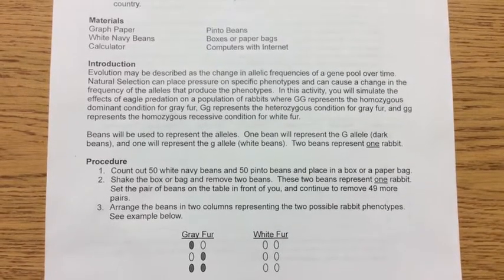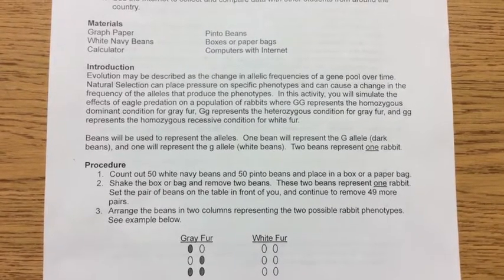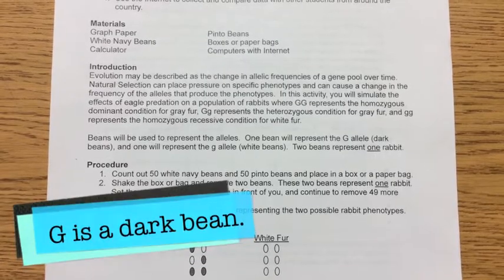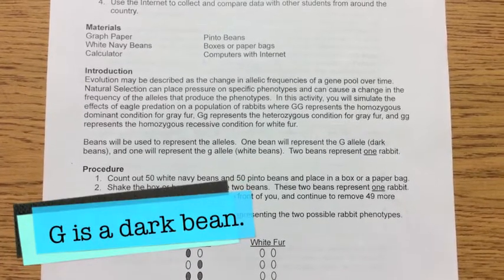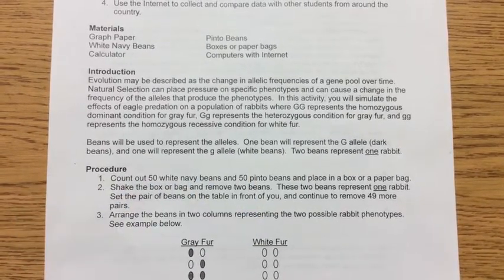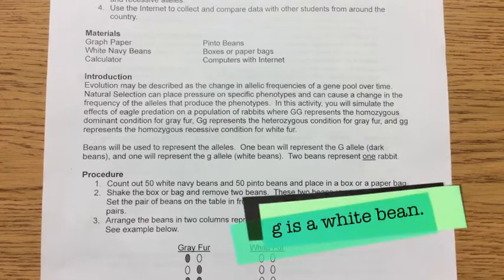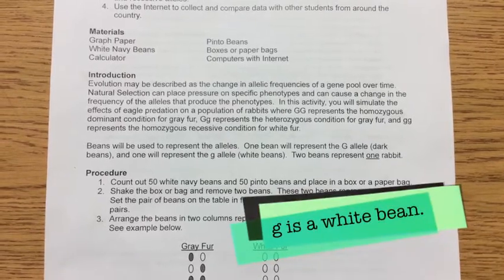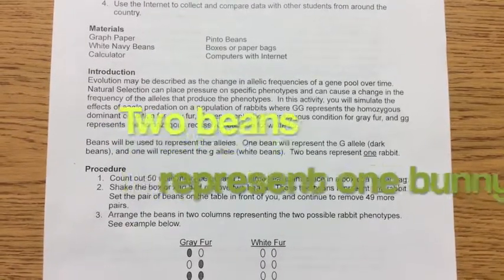One bean will represent the big G allele, and those are the dark beans. One will represent the little g allele, and those are the white beans. Two beans will represent one rabbit.